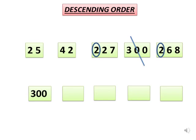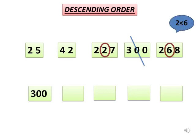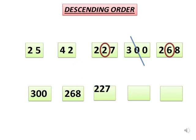Now let's see which number will come after 300. Let's compare the remaining two three-digit numbers. Both the numbers have 2 at hundreds place, so we will compare the tens place digit of these two numbers. In 227 it is 2 and in 268 it is 6. 6 is greater, so the number 268 is greater and we will write it in the second box, and 227 in the third box. We will cross both the numbers.